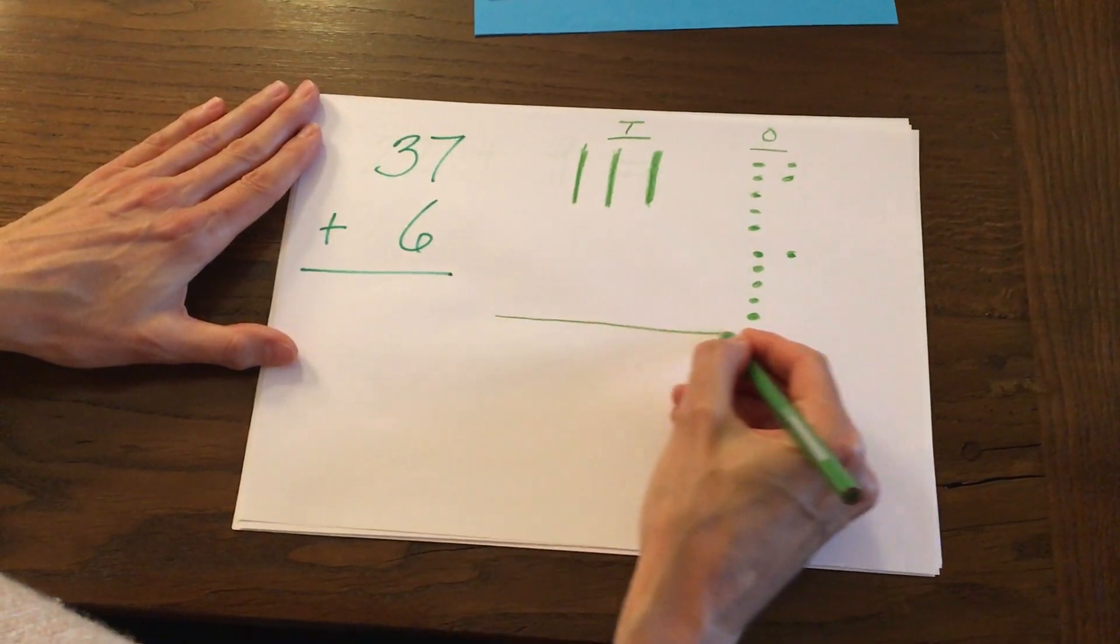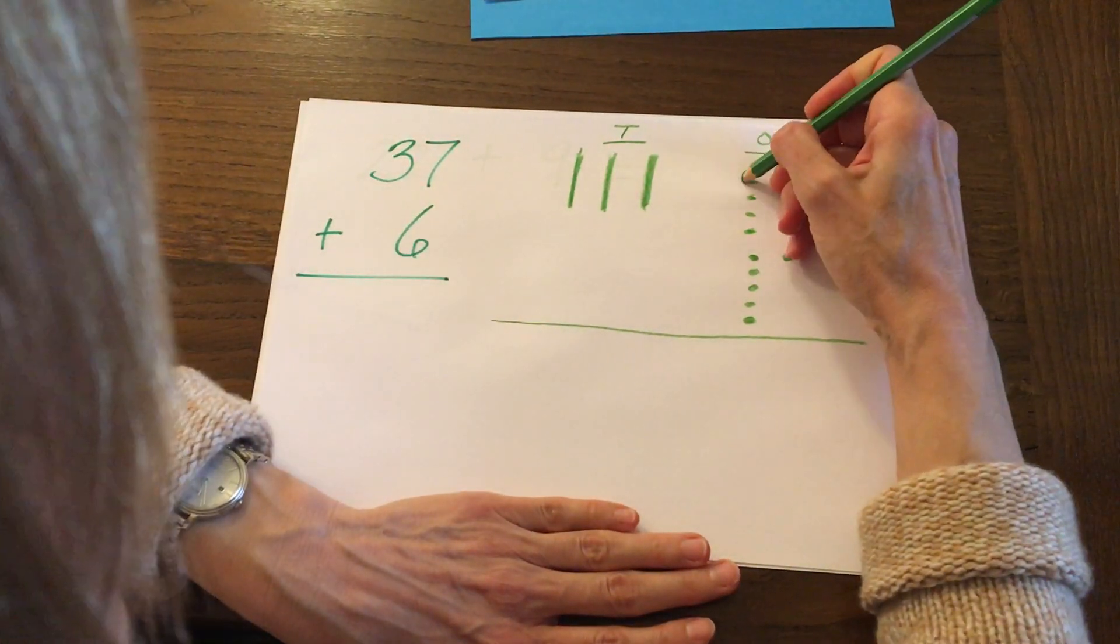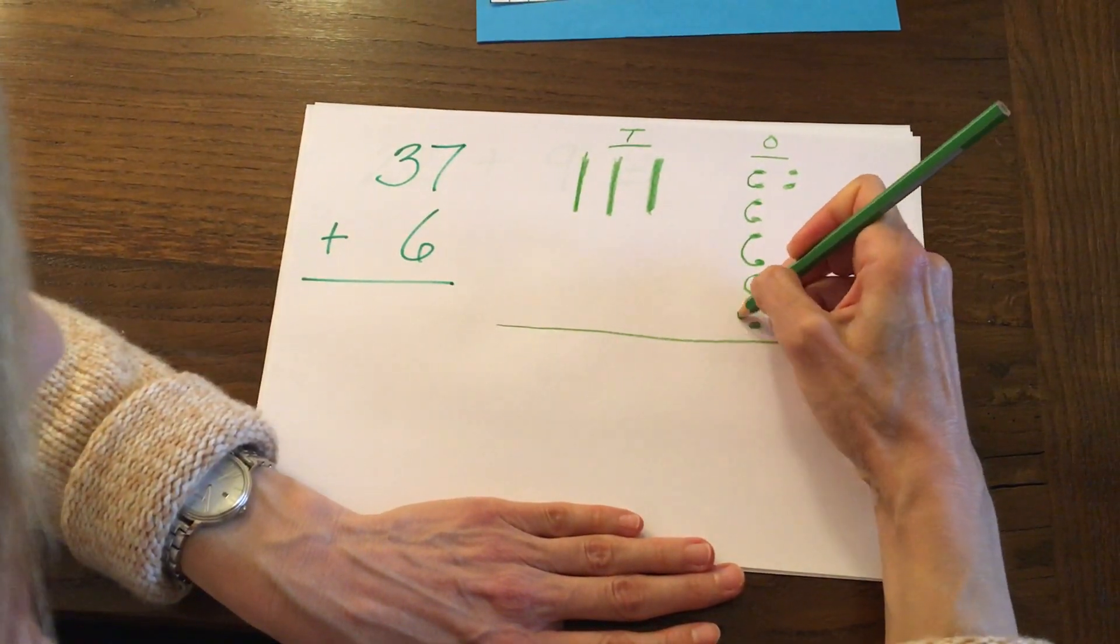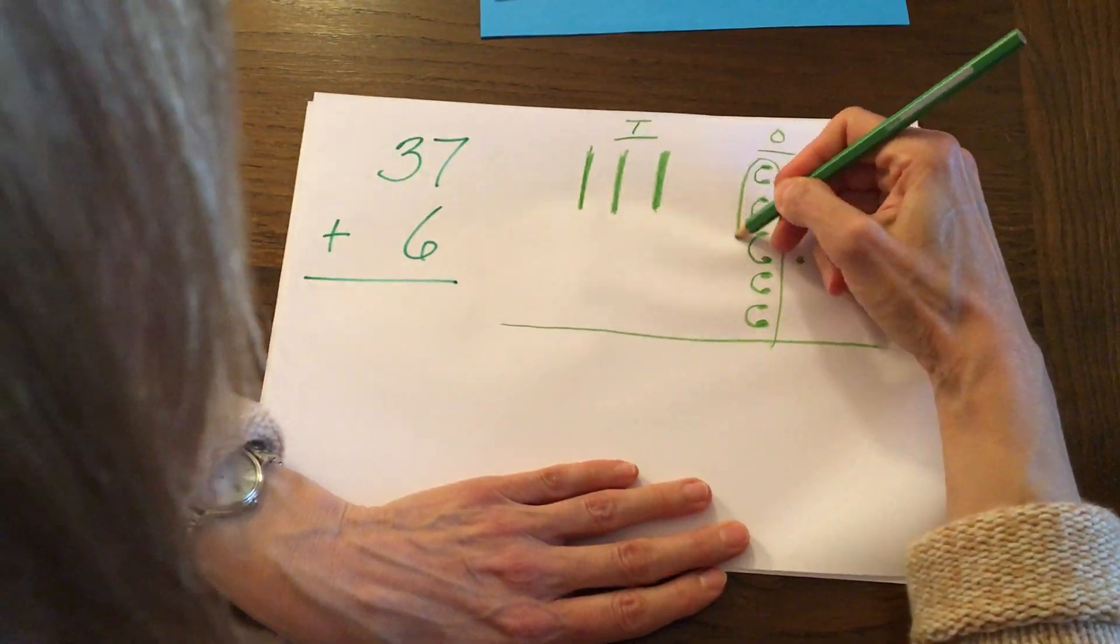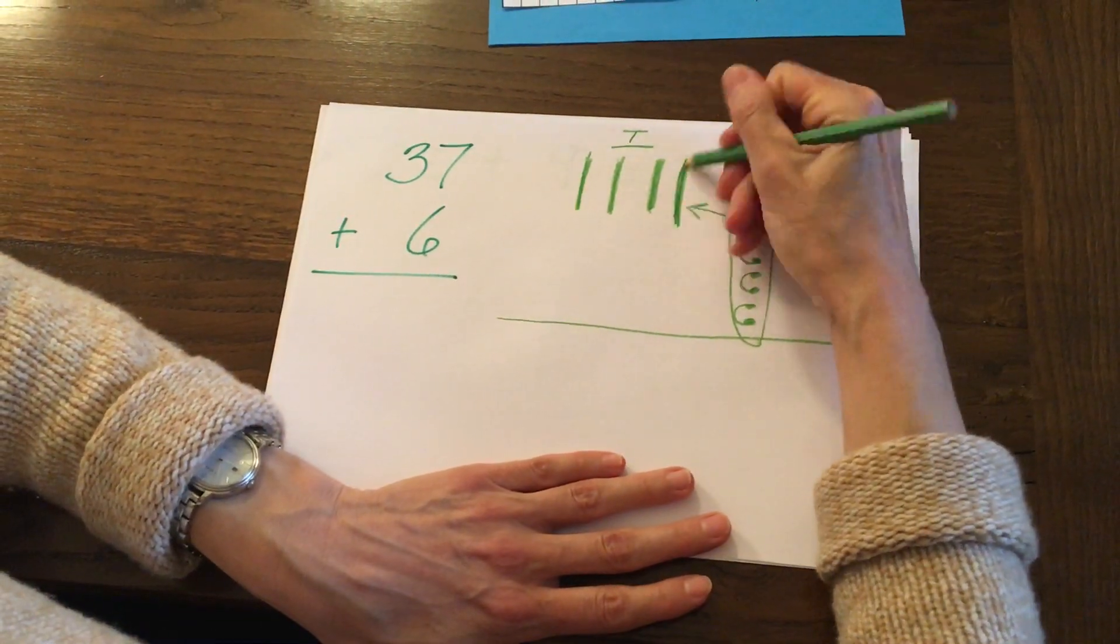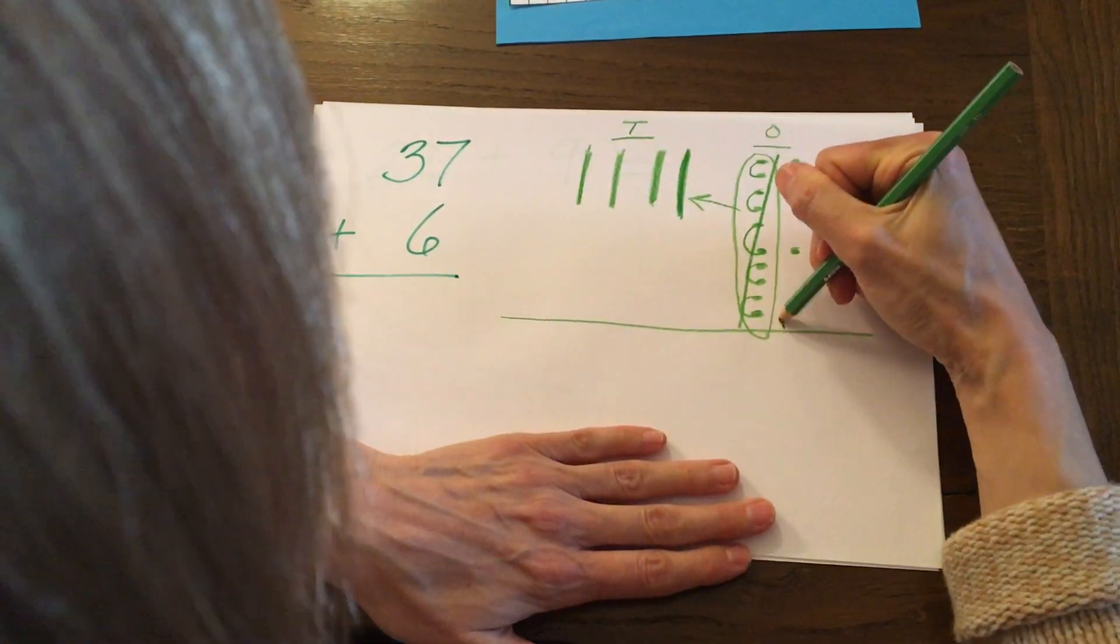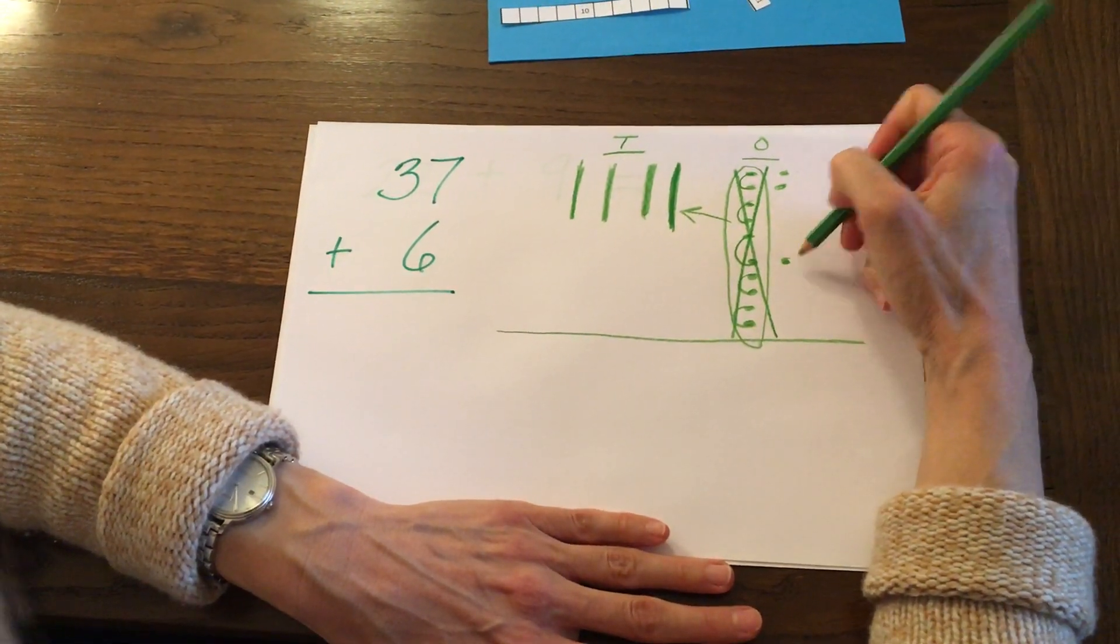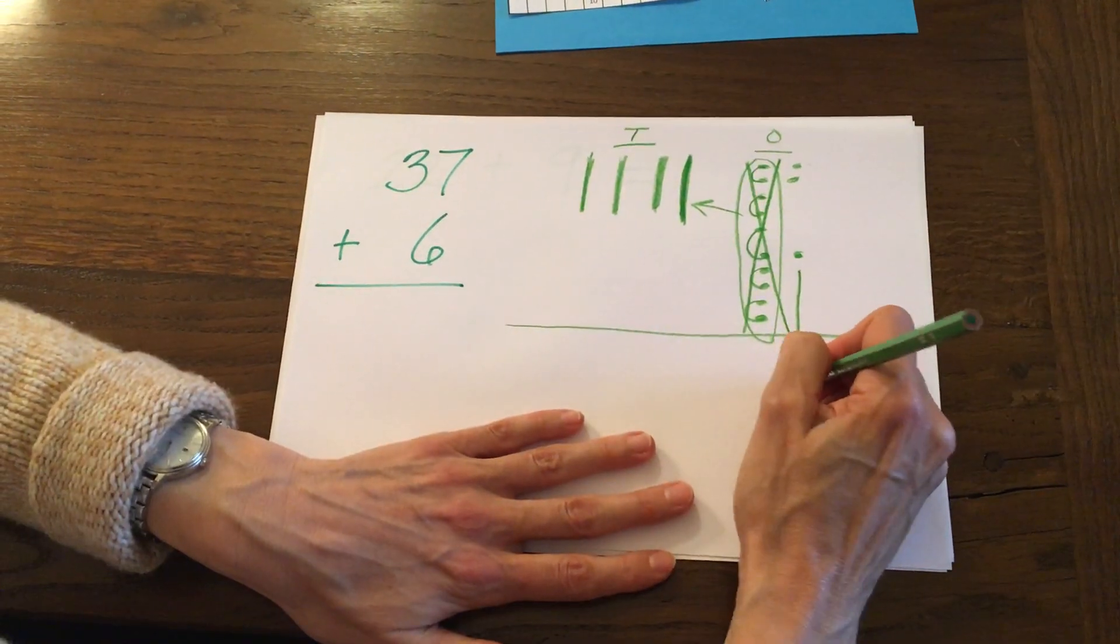Now let's check. Do we have 10 ones to trade for a 10? Two, four, six, eight, ten. We do. So let's take those 10 ones and trade them by putting another 10 over here. Now those are gone. We use them. I'll X those out. But look, don't forget about these other ones that are still there. We've got to bring them down. One, two, three. I'll draw those down here.